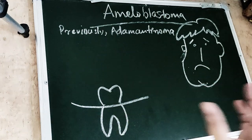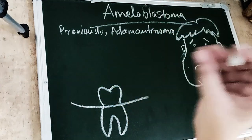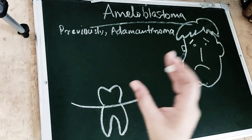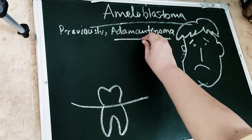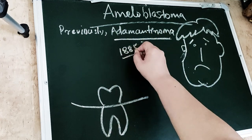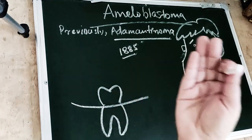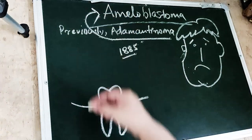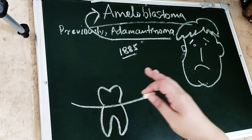Robinson described this tumour as unicentric, non-functional, with intermittent growth. Initially it was called adamantinoma, given by Malassez in 1885. But since there is no hard tissue — no enamel — being formed, the term was replaced to ameloblastoma by Churchill in 1934.